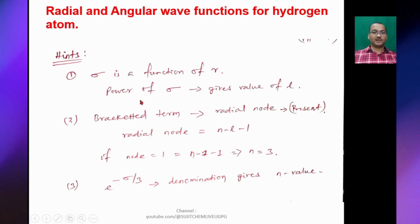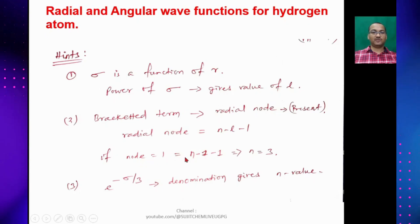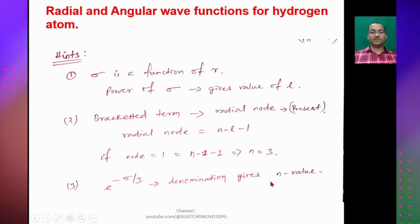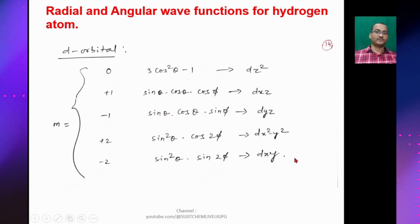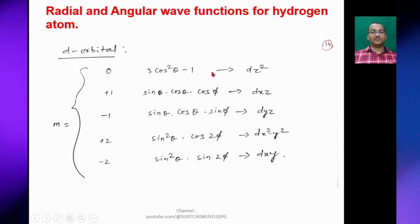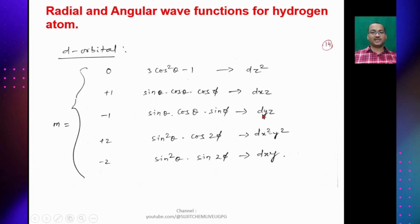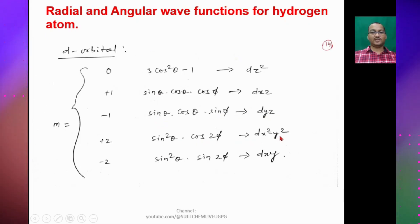Here σ is a function of r; the power of σ gives the value of l, and the bracketed term gives the radial node, where radial nodes = n − l − 1. For d orbitals, m values are 0, ±1, ±2, giving angular forms: (3cos²θ − 1) for d_z², sinθ cosθ cosφ for d_xz, sinθ cosθ sinφ for d_yz, sin²θ cos2φ for d_(x²−y²), and sin²θ sin2φ for d_xy.